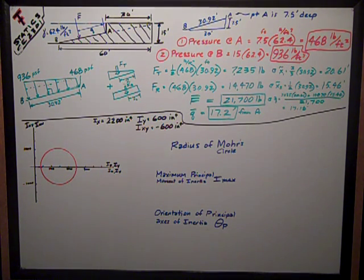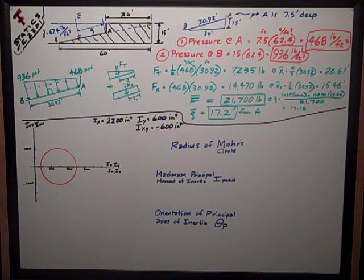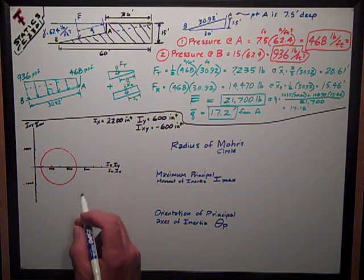The last page was a Mohr's circle problem, where we gave you the values of Ix, Iy, and the product of inertia Ixy, and we asked you to plot those on Mohr's circle. I did that because I wanted to have a nice pretty circle for y'all.